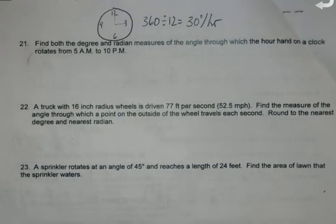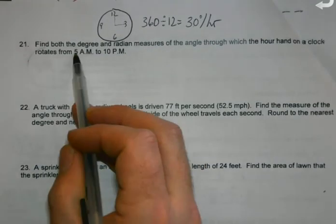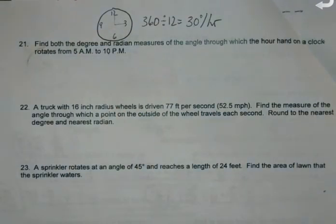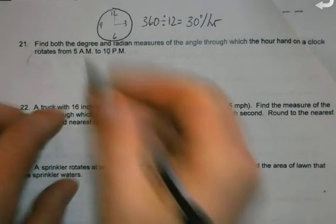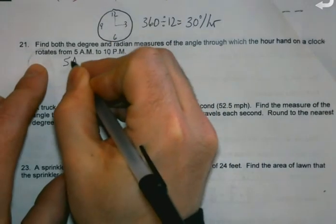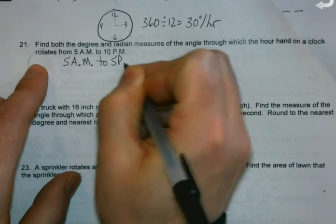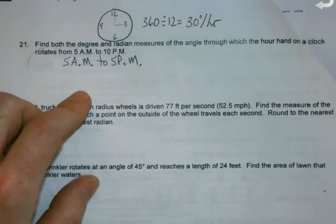When we're trying to do it for this one, 5 AM to 10 PM, a couple of questions. One, how many hours is that? Let's do this in pieces since we're having some issues here. Let's say we're going from 5 AM to 5 PM. How many hours? That's 12 hours.